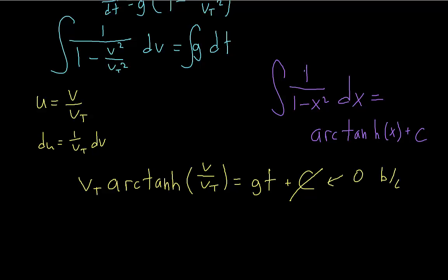So this c is going to be equal to zero if we assume that the initial velocity is equal to zero. And we're going to assume that the initial velocity is equal to zero, because if it isn't, then it gets a lot more complicated. So if the initial velocity is zero, then the inverse hyperbolic tangent of zero is equal to zero.